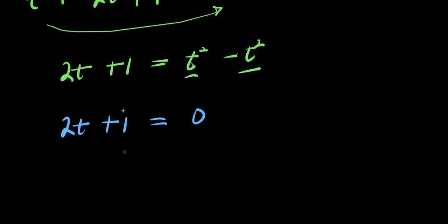So what do we do? We move this positive 1 over here, it becomes negative 1, so we have 2t equals negative 1.